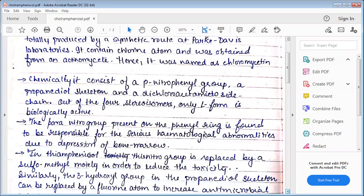Chemically it consists of a p-nitrophenyl group, a dichloroacetyl chain, and out of the four stereoisomers, only L-form is biologically active.